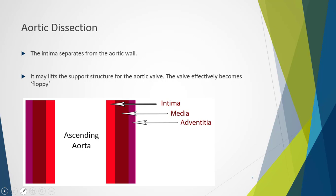Aortic dissection is a dangerous condition where the intima layer of the aorta may be separated from the aortic wall — consider the intima being like wallpaper and someone sliding their hand between it and the wall. It is important to note that the dissection does not always travel away from the heart. In some instances, the dissection travels back into the aortic root, lifting the support structure of the aortic valve. The valve effectively becomes floppy, unable to support itself, and in significant cases can actually prolapse back down into the left ventricular outflow tract.